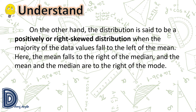In a positively or right-skewed distribution, the majority of data values fall to the right of the median, and the mean and the median are to the right of the mode.